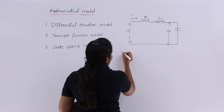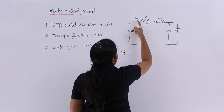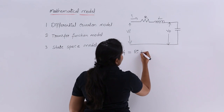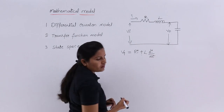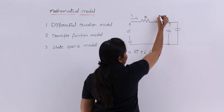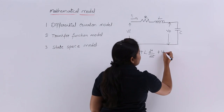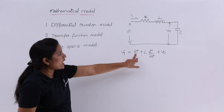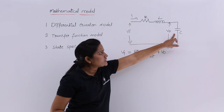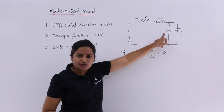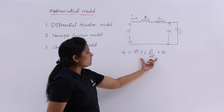Now, if I want to write the equation for the input voltage Vi, it is equal to R·i plus L·(di/dt) — the voltage across the inductor — plus V_naught, the voltage across the capacitor. In parallel, voltage is the same, so Vi equals this sum.